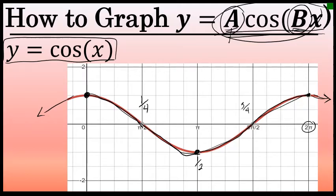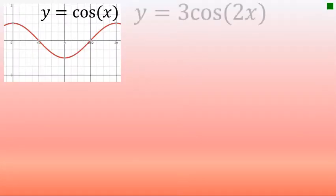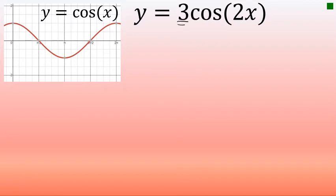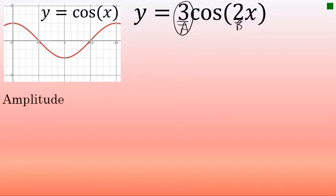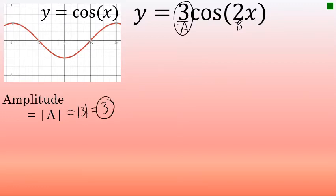For the first example, we'll graph y equals three times the cosine of two x. In the corner of the screen is the graph of y equals cosine of x, since any equation in the form y equals a times cosine of bx is based on that graph. The value of a corresponds with the graph's amplitude, which is the absolute value of the number in front of the cosine. In this case, the amplitude is the absolute value of three, which is three.